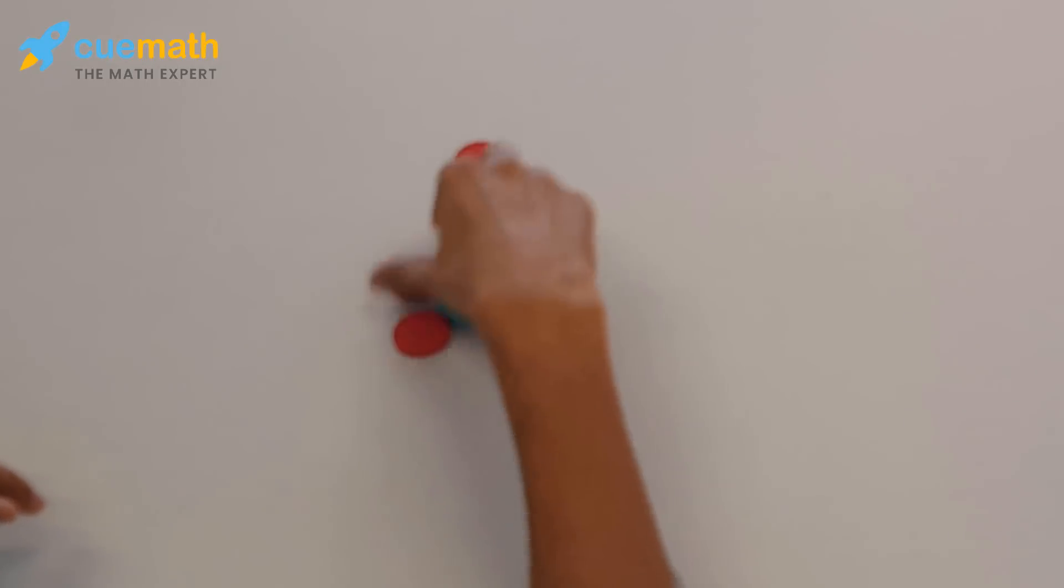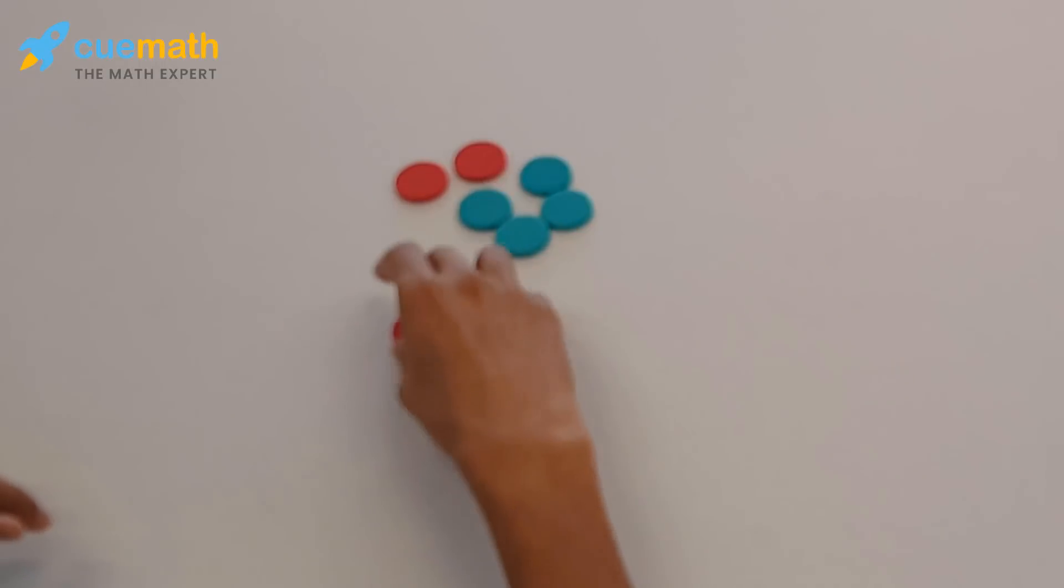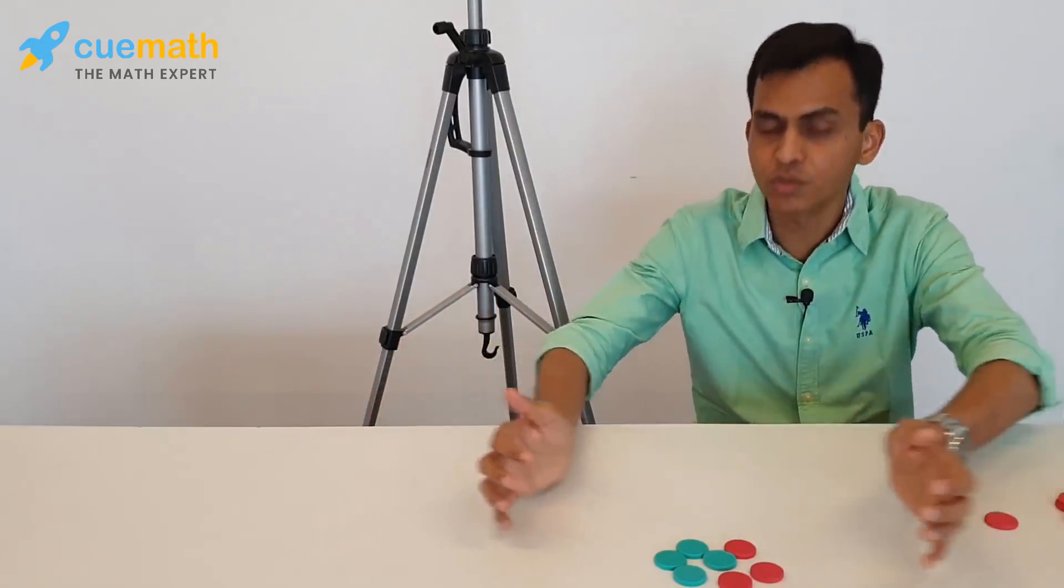One, two, three, four, five, six, seven. This act of addition, which is putting together, really helps form a strong mental model in a child's mind.